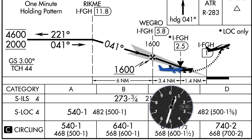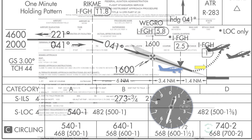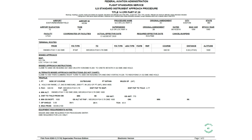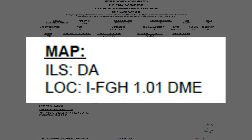So where is the missed approach point, and why isn't it precisely defined on the profile view? The point where the solid black line meets the thin hash-marked one indicates the precision approach point where you reach the decision altitude on the glide slope — it doesn't apply for us on the non-precision approach. But there is still a missed approach point indicated: it's the 1 DME point from the localizer of this approach, identifier IFGH. You can confirm this in the amendment document for this approach in the navigation database review on the FAA website, which clearly shows the missed approach point is the 1 DME off the localizer.